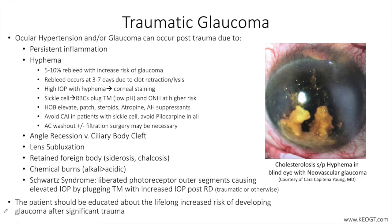One major concern is when an initial hyphema is resolving but a re-bleed occurs. This occurs in about 5-10% of hyphemas with an increased risk of glaucoma. Re-bleed often occurs at 3-7 days post initial hyphema formation due to clot retraction and lysis. High IOP with hyphema can result in corneal staining, which is both time and IOP dependent.